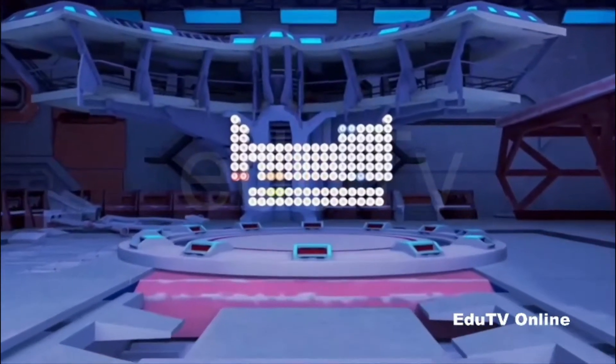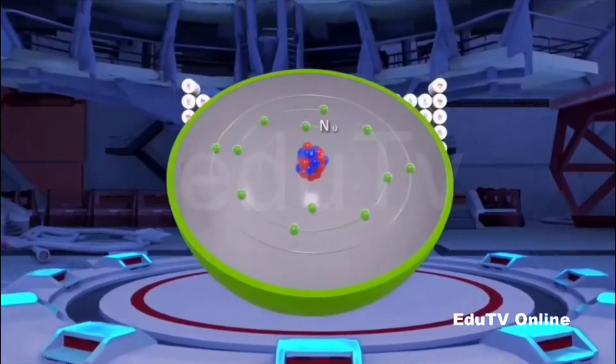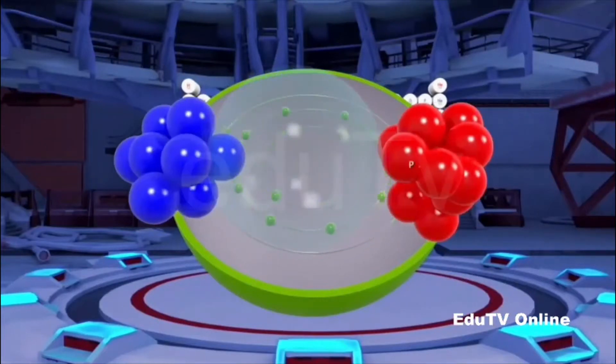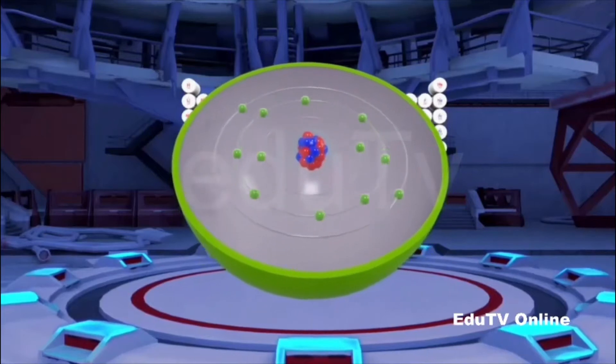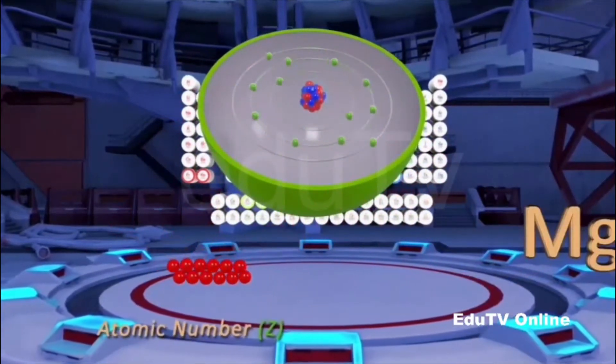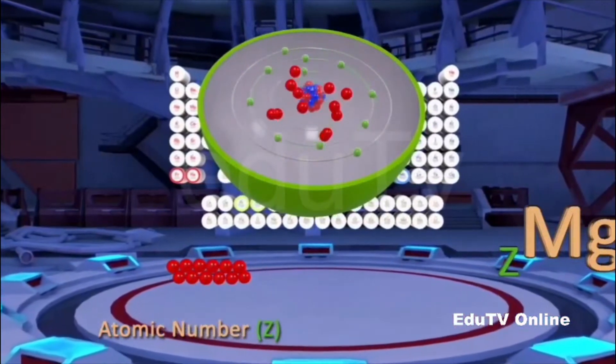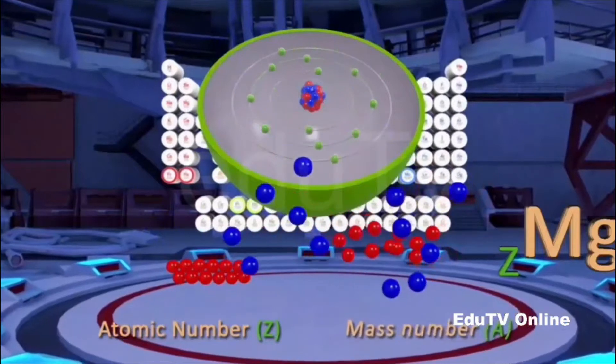You already know that an atom consists of the nucleus at its center, which contains positively charged protons and electrically neutral neutrons. The number of protons in an atom is called its atomic number, represented by Z. The mass number of an atom, decided by the sum of protons and neutrons present in an atom, is represented by A.